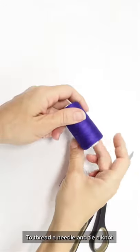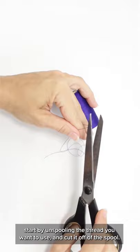To thread a needle and tie a knot, start by unspooling the thread you want to use and cut it off from the spool. Cut it off with a pair of sharp scissors to create a point that will be easier to thread through.